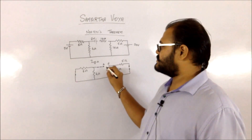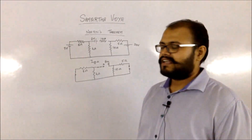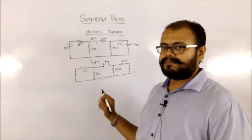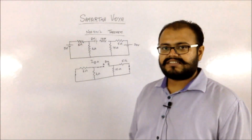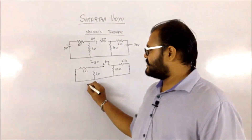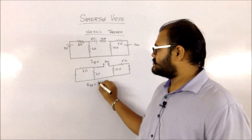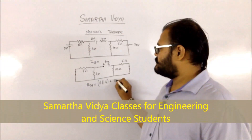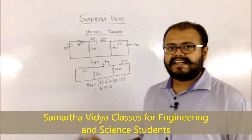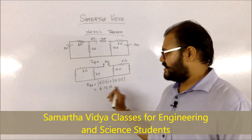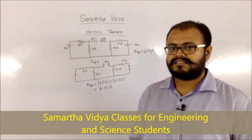Now you need to find the resistance across the terminals, which is your Rth. What you observe is that your 6 ohm and 4 ohm are in parallel with each other, and your 15 ohm and 5 ohm are in parallel with each other, and that combination is in series with each other. So your Rth value is going to be (6 parallel 4) plus (15 parallel 5). Calculating these values, you get your Rth as 6.15 ohms.